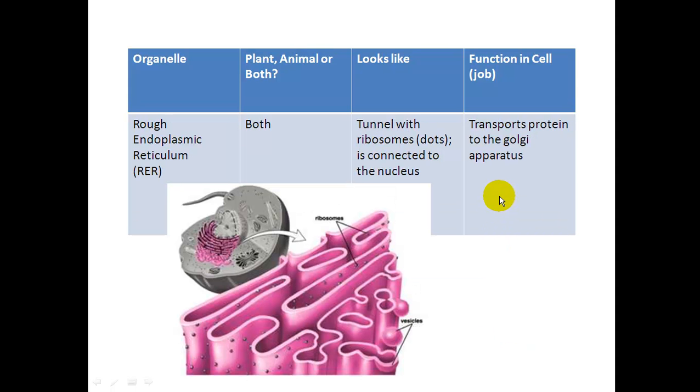Next organelle is the rough ER or endoplasmic reticulum. Because it is rough, there's a smooth one as well. You can abbreviate the rough ER as RER on any notes or worksheets or tests. It is found in both plants and animal cells. And as you can see from the diagram, it is always next to the nucleus. It's connected to the nucleus by the membrane. And because it is rough, it contains ribosomes. And ribosomes are these small little dots here that are attached to the rough ER, and it's kind of like a tunnel system. That's what it looks like.